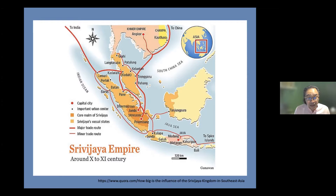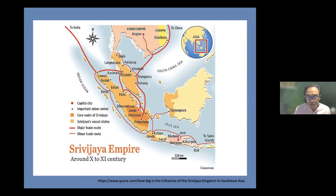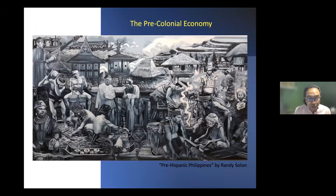Eventually the Srivijayan Empire declined due to piracy and was replaced by the Majapahit Empire in present-day Indonesia, until the establishment of the Muslim sultanates. It is through this network that concepts such as Raha and Batala, and even a system of writing, came to the Philippines. This is how the Austronesian culture of Filipinos became further enriched with outside cultural and trade influences.